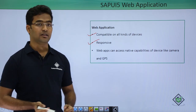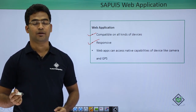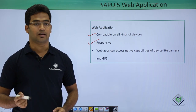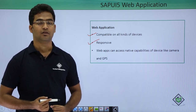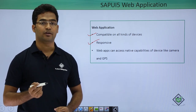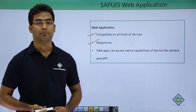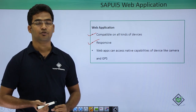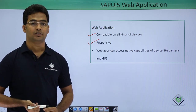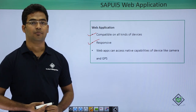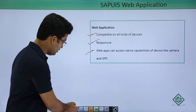The third feature is that these web applications can access the native functionalities of particular devices. For example, if we are using a mobile device it could access the camera functionality. If we are integrating Google Maps in a SAPUI5 application, it could access the GPS capabilities of the mobile device.